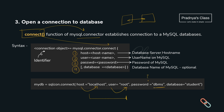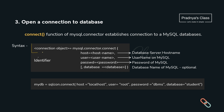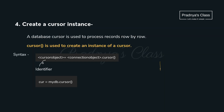No need to worry about these three parameters — generally they will be mentioned in the question. Now the fourth parameter is database. Whichever database you have to work on, that name you will mention here. It is an optional parameter. If you are not working with a database you can skip it. But generally we work with the database because tables get created in the database itself. So with the connect function we will create one connection object — let's give it the name mydb. With that step, connection gets established between Python and MySQL.